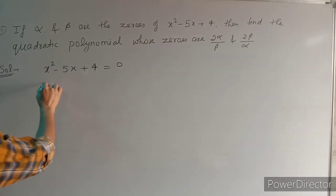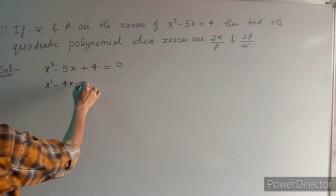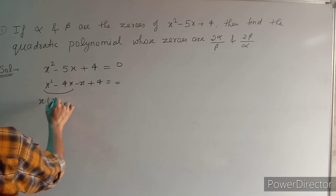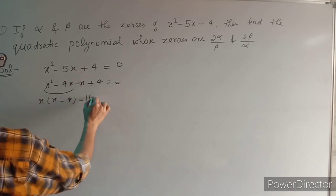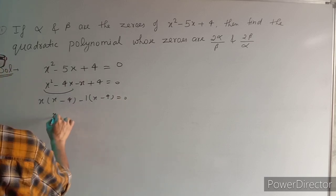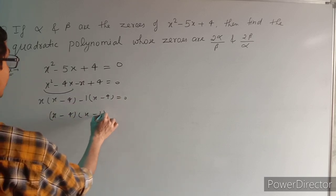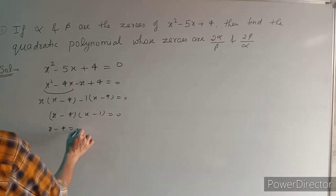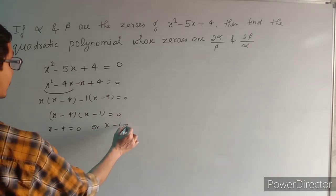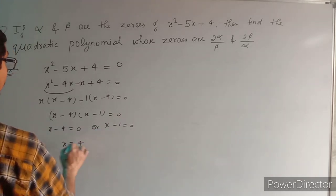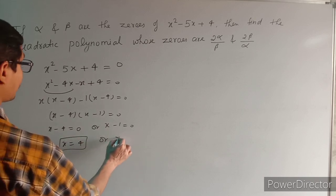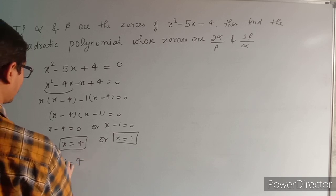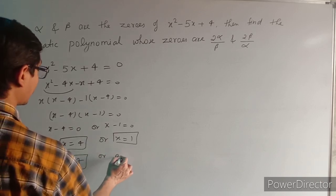First, let's find the zeros: x² - 4x - x + 4 = 0. Taking x common: x(x - 4), and taking -1 common: -1(x - 4) = 0. So the factors are (x - 4) and (x - 1). Setting x - 4 = 0 gives x = 4, and setting x - 1 = 0 gives x = 1.